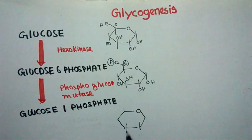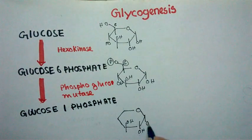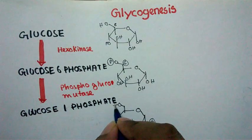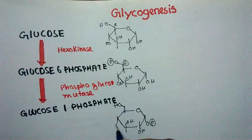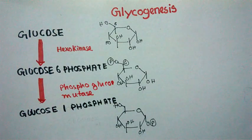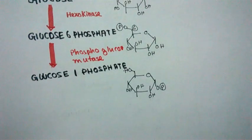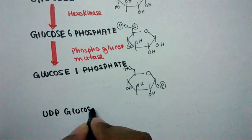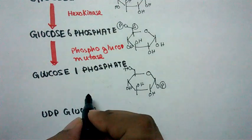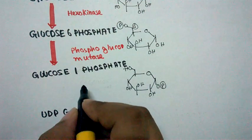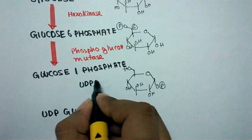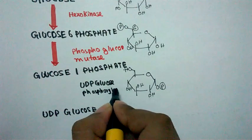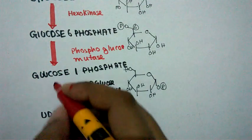Glucose-6-phosphate would be converted into glucose-1-phosphate, and glucose-1-phosphate is actually an isomer of glucose-6-phosphate. After getting converted into glucose-1-phosphate, it would be converted into UDP-glucose, and this reaction is catalyzed by UDP glucose pyrophosphorylase.